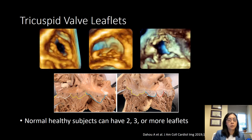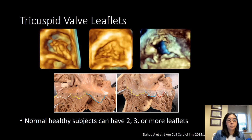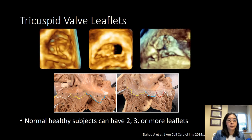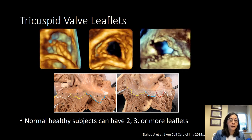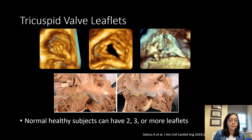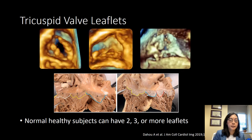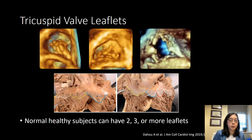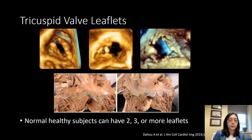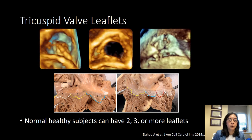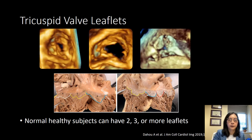If you look at the bottom row, these are pathologic specimens of tricuspid valve structures. On the left, there are 3 leaflets identified: septal, posterior, and anterior. And then on the right, you can see that there are 4 leaflets identified.